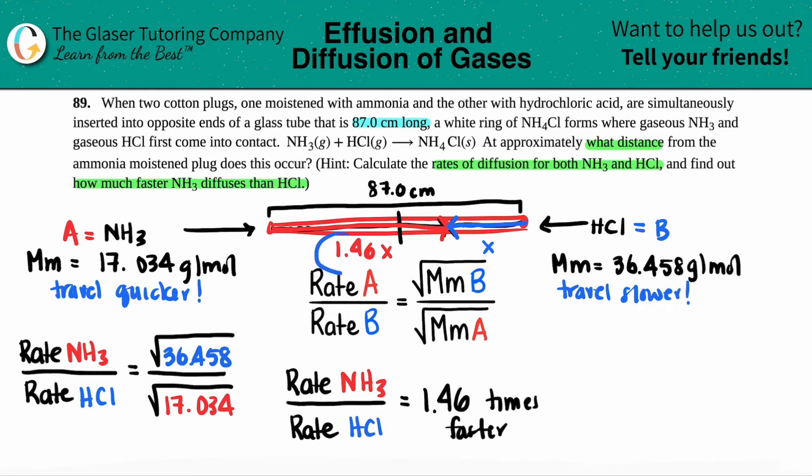If we're talking about distances, this whole red piece plus this blue piece has to equal the whole thing, 87 centimeters. Let's give it a shot. 1.46x plus 1x equals 87. If we combine the x's, 1.46x plus 1x is just 2.46x equals 87.0. Now we just want to solve for x. Divide both sides by 2.46.